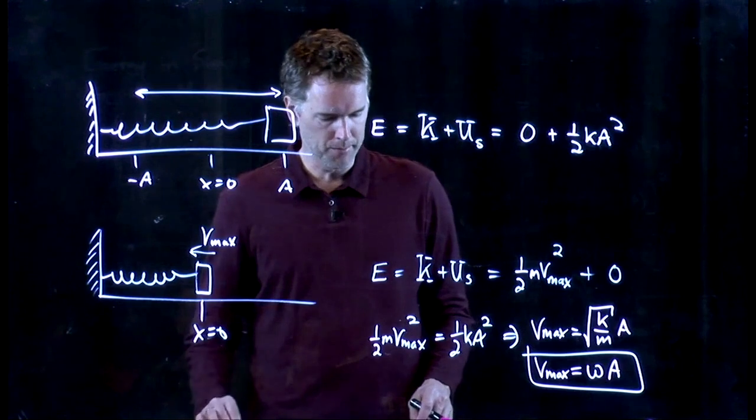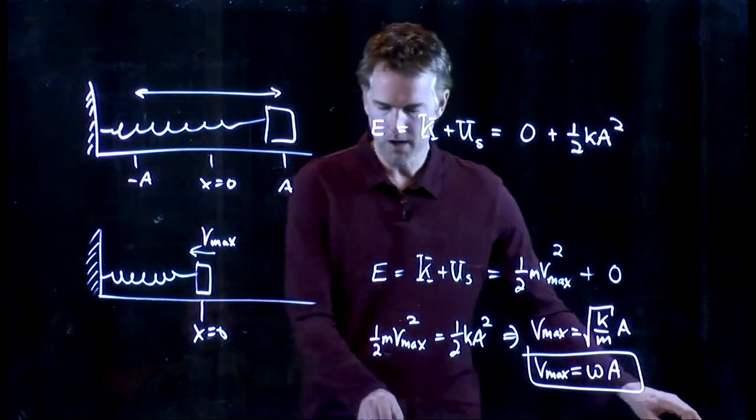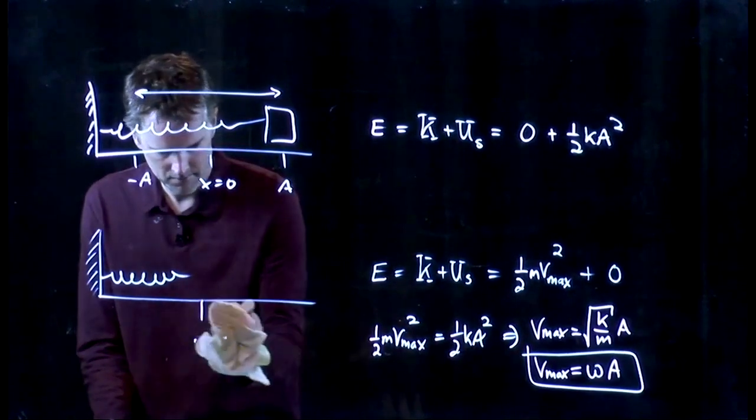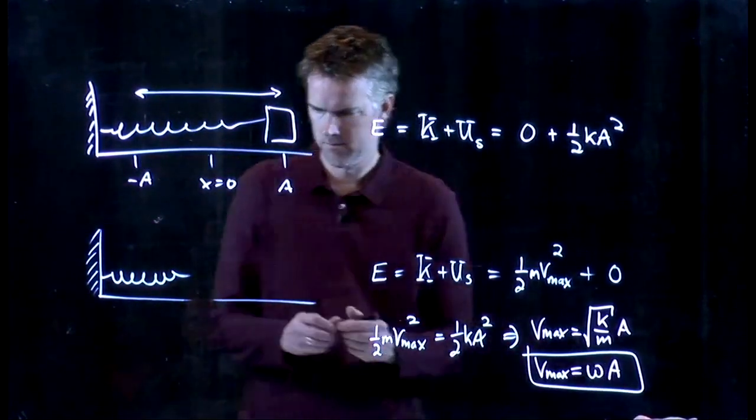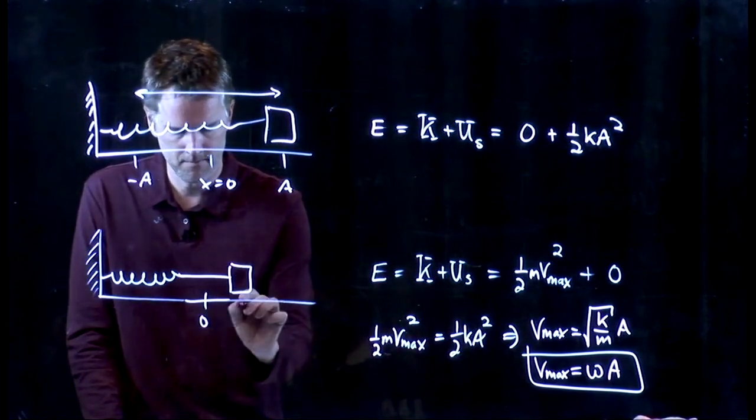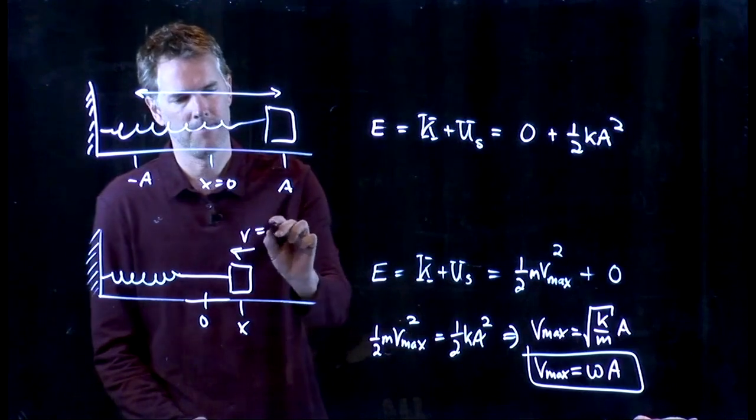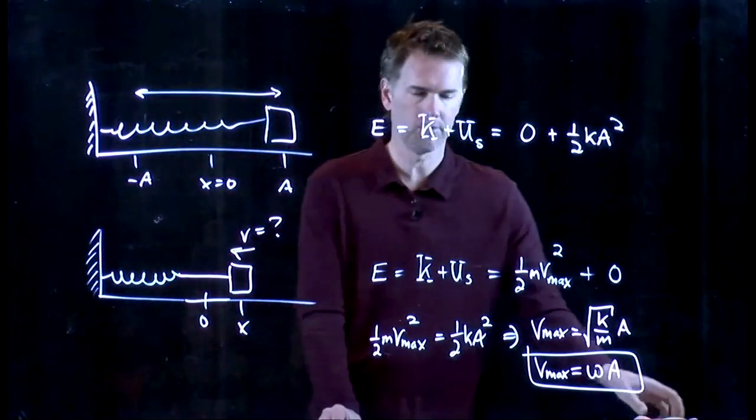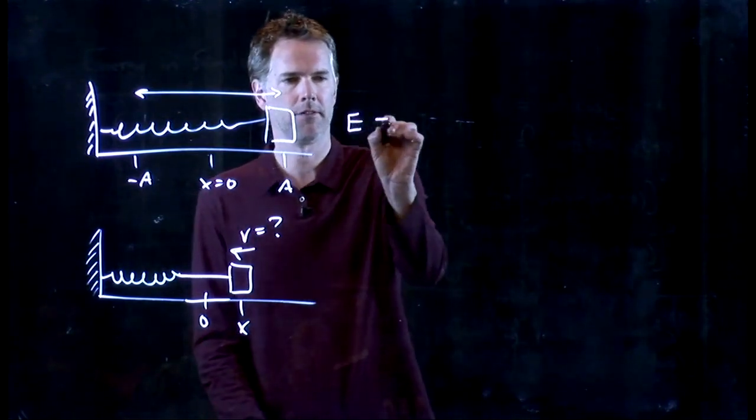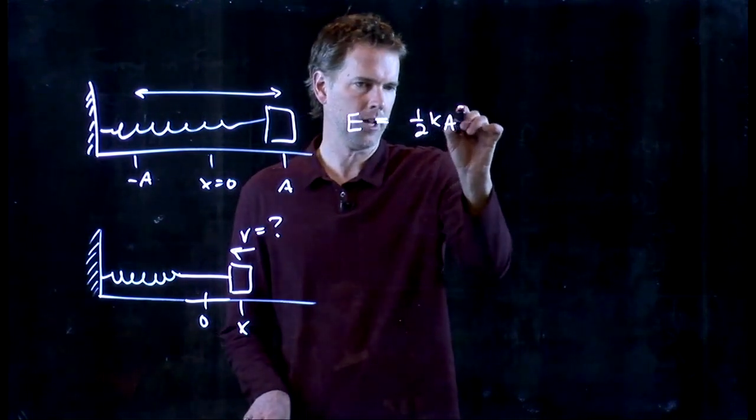But let's say you're at some arbitrary point. Let's say you're not at the maximum. So let's redraw this picture slightly at some other location. Let's say you're there at some position x and you want to calculate the speed. What do we do? Conservation of energy tells us that energy has to go somewhere. Here this is one-half ka squared.